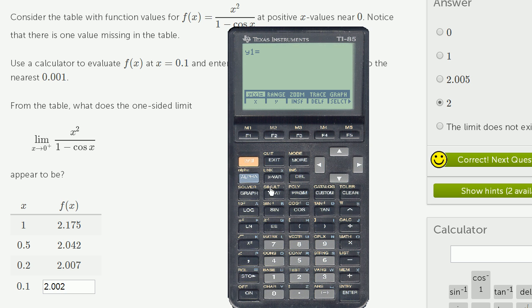Let me redefine my function here. It's going to be x squared divided by 1 minus cosine of x. And then let me make sure that the range of my graph is right, so I'm zoomed in at the right part that I care about. So let me go to the range.